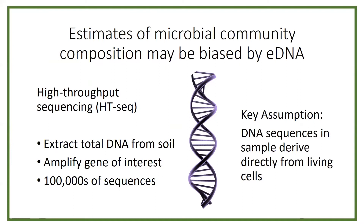One of the key assumptions we're making is that every DNA sequence we see derives directly from a living cell — the cell is present in the soil, alive and well, you kill it when you extract its DNA, and then you can draw direct comparisons between your sequences and the living cells in the soil. But eDNA violates that key assumption, because the cell from which eDNA came might have been dead for a long time, but that eDNA remains stable and sequenceable in the soil. And you can't tell those apart.